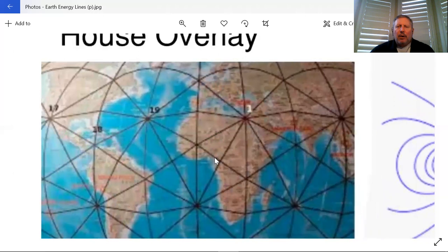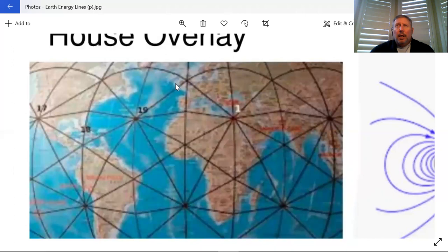As you can see, there's one goes through here, which I believe is called the Michael-Mary line, which was discovered by Hamish Miller. He was a very renowned dowser up in England and he mapped this Michael-Mary line.